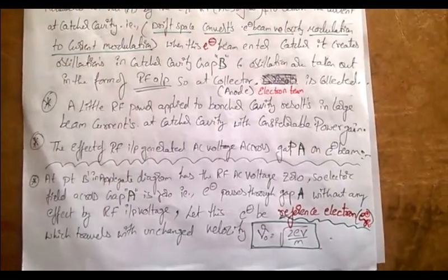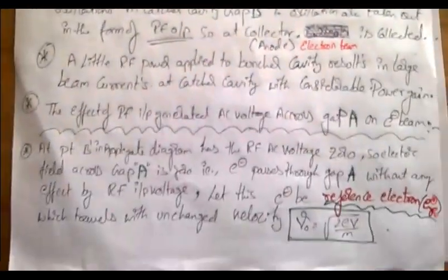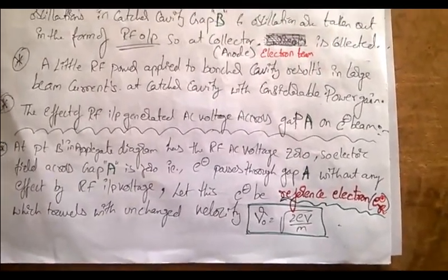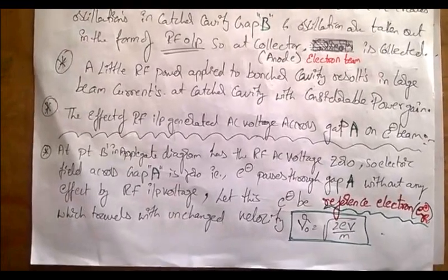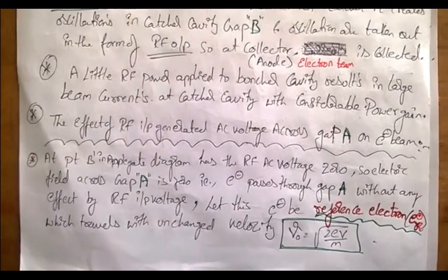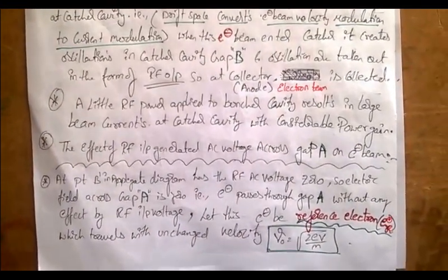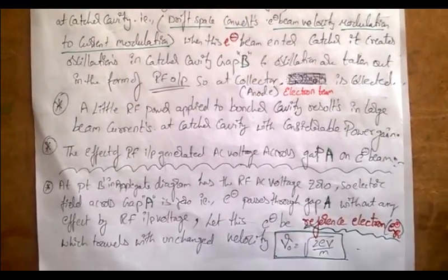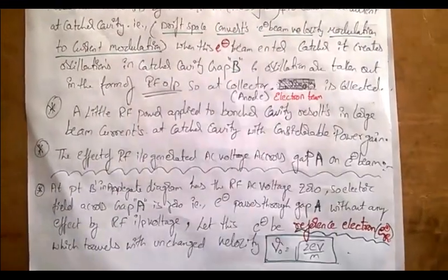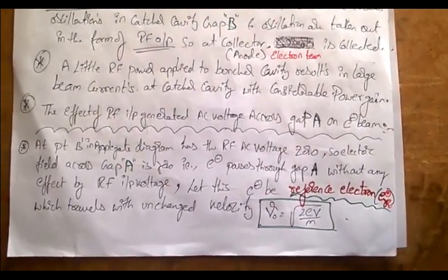Let us see the effect of RF input: the AC voltage generated across gap A, which is the buncher cavity gap between the two grids. When the RF input is not given, the electron travels with its specified velocity and is not affected by any induced voltage. Such an electron goes normally and is collected at the anode — this is considered the reference electron.